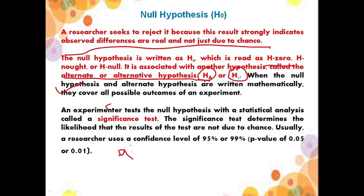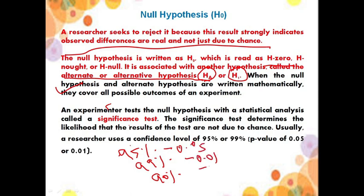Generally, there are three types of significance levels: 95%, 99%, and 90%, corresponding to p-values of 0.05, 0.01, and 0.10. But most importantly, we use two types — 95% and 99%.